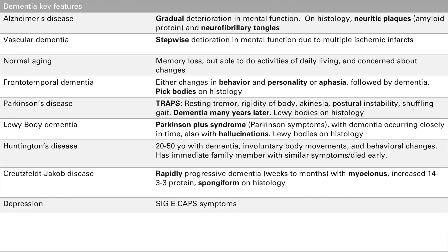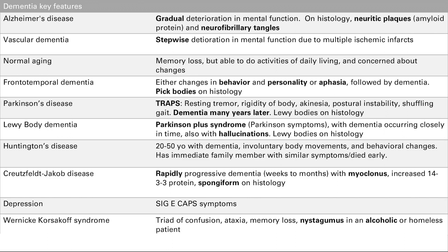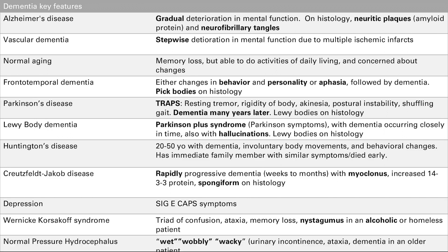The mimics of dementia: depression has SIG-E-CAPS symptoms — see the psychiatry chapter. Wernicke-Korsakoff presents with a triad of confusion, ataxia, and nystagmus, plus memory loss — basically looks like a drunk patient with eye problems, typically an alcoholic or homeless patient. Normal pressure hydrocephalus presents with the three W's: wet, wobbly, wacky — urinary incontinence, ataxia, and dementia — usually in an older patient.